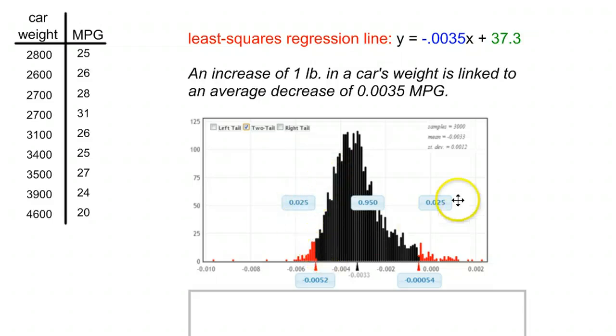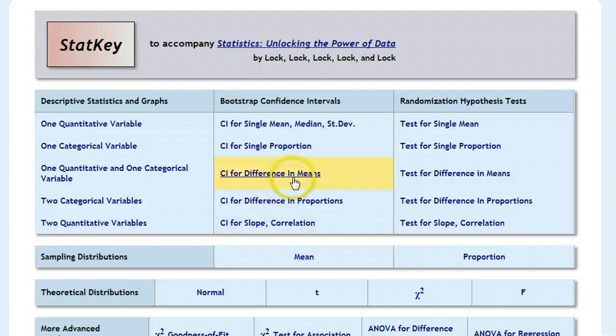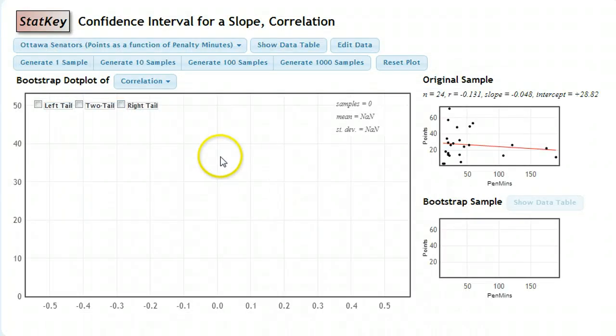Now if we put this data in StatKey, we're going to end up with something like this. I'm going to go ahead and pull that up just so you can see how we go through that. The first thing you're going to do is, under your confidence intervals at the bottom, you have a confidence interval for slope. I'm going to click on that. I'm going to edit the data.